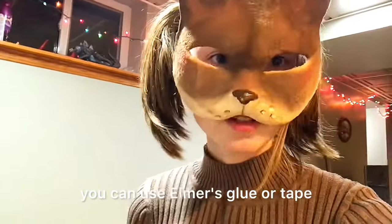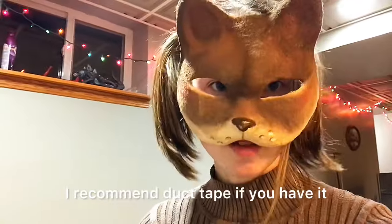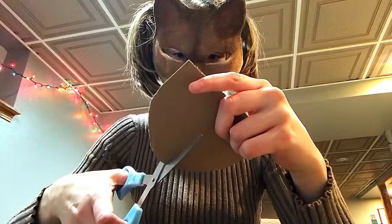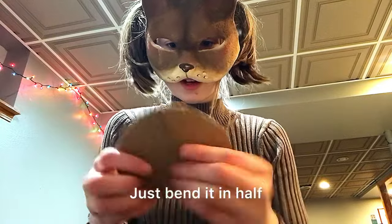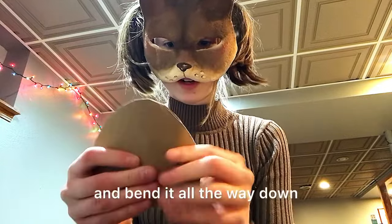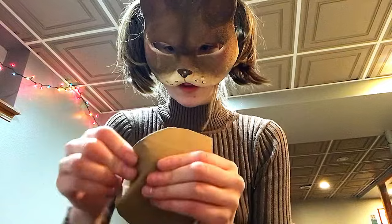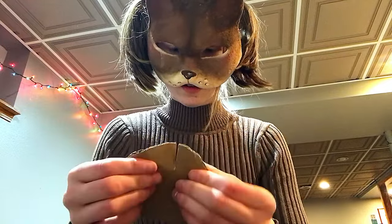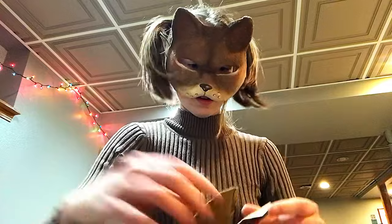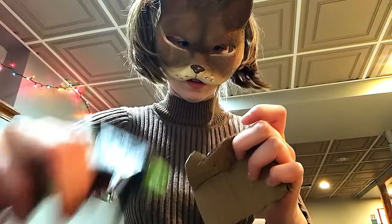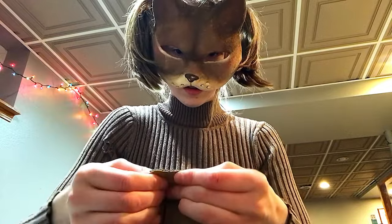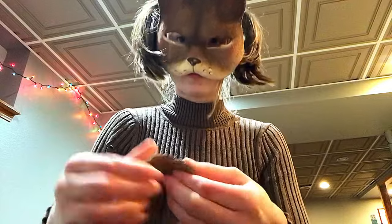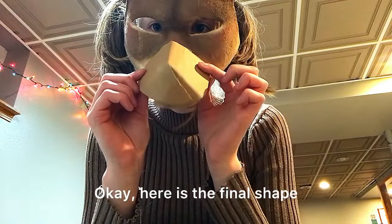Got the hot glue gun heating up. If you don't have a trusty hot glue gun, you can use Elmer's glue or tape. I recommend duct tape if you have it. That's going to be the strongest. Cut it on the round side. Bend it in half. Then bend it all the way down. Okay, here is the final shape.